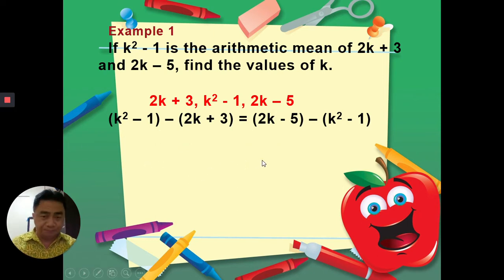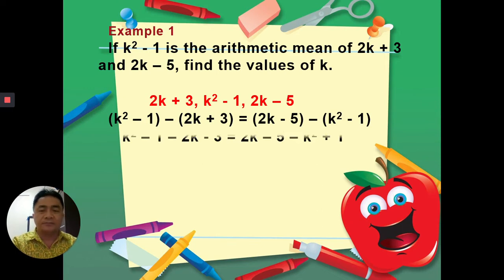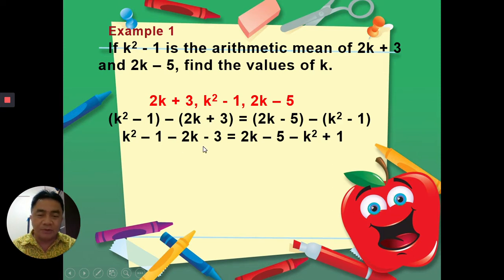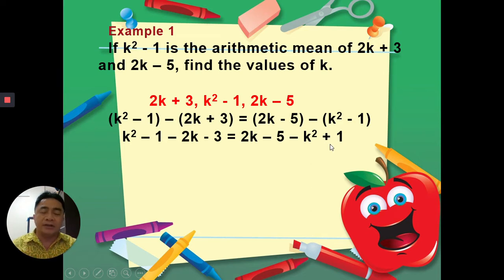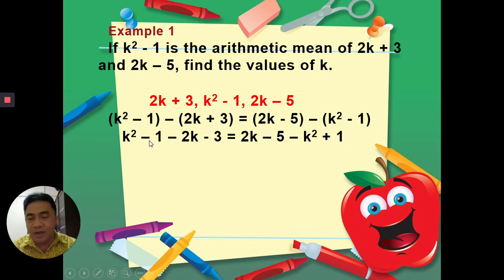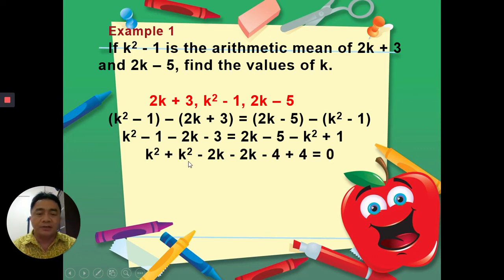We take out the parentheses. For the left side, k² − 1 doesn't change, but negative times positive 2k is −2k and negative times positive 3 is −3. On the right side, 2k − 5 doesn't change, then negative times positive k² is −k² and negative times negative 1 is +1. Now we move all terms to one side, arranged by degree: power 2 first, then power 1, then constants.